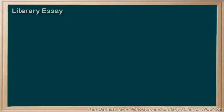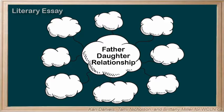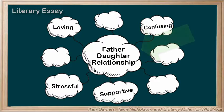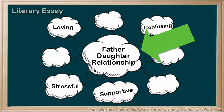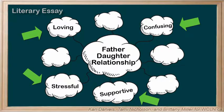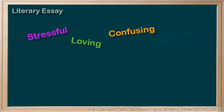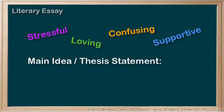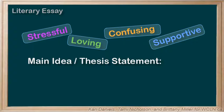Let's do an example. If you were writing an essay on the relationship between a father and his daughter as shown in a short story, you might begin by writing down all the different ways the father and daughter interact. In the middle of the concept map, you would identify what you are writing about — the relationship between the father and daughter. Then you would start describing that relationship and their interactions. These descriptive words would lead us to believe that there are many sides or facets to a relationship between a father and a daughter.